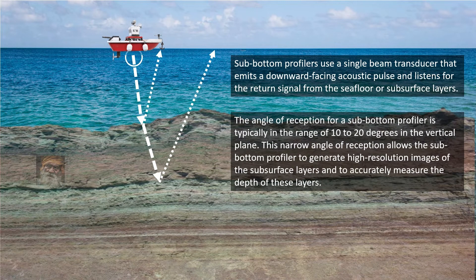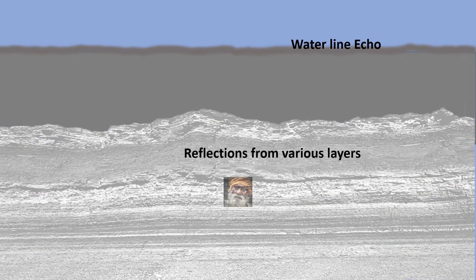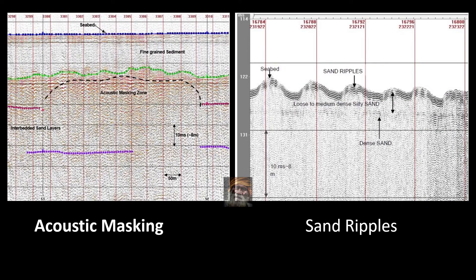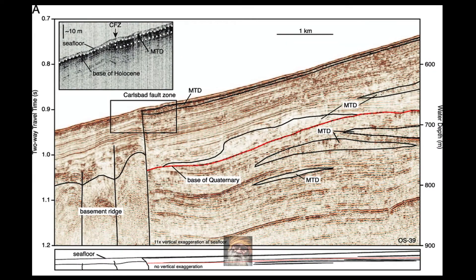The sub bottom profiler also uses the same principle as the single beam echosounder and has a similar 10 to 20 degree vertical plane reception. With this survey we get a vertical profile of the seabed. This data is very useful for offshore construction of oil platforms or laying of subsea pipelines.